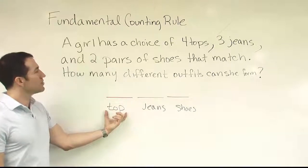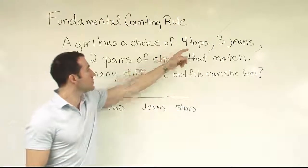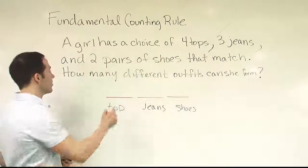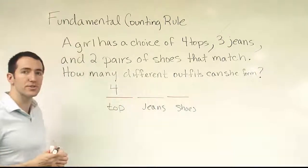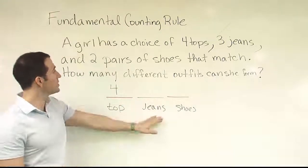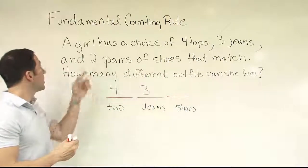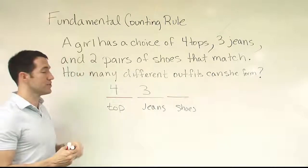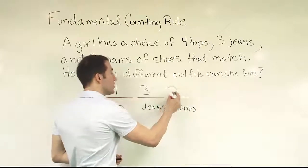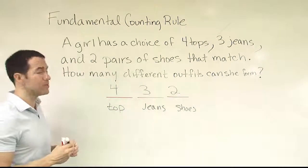So how many different tops can she choose? She's got four options for the tops, so we're going to put a four there to represent that there are four tops she can choose among. How many different pairs of jeans can she choose? There are three different pairs of jeans, so we'll use three here. How many pairs of shoes? Two pairs of shoes. So we're going to put a two here to represent the number of shoes she can choose among.